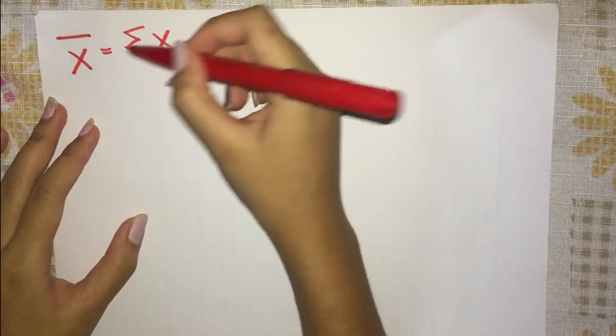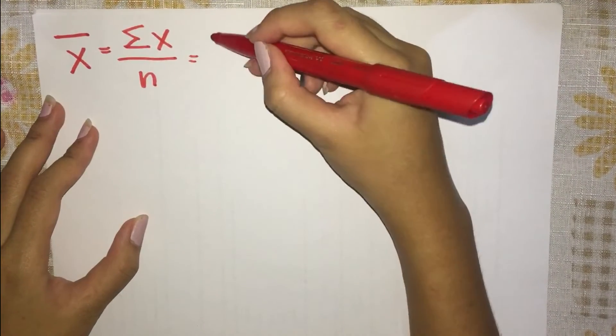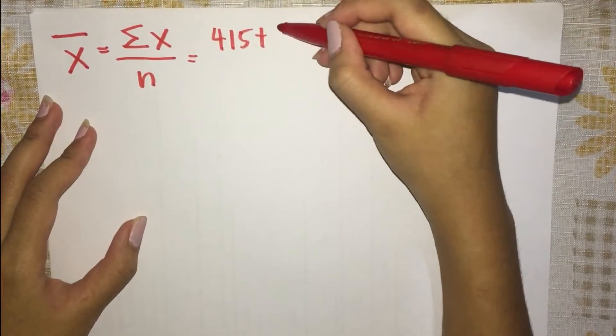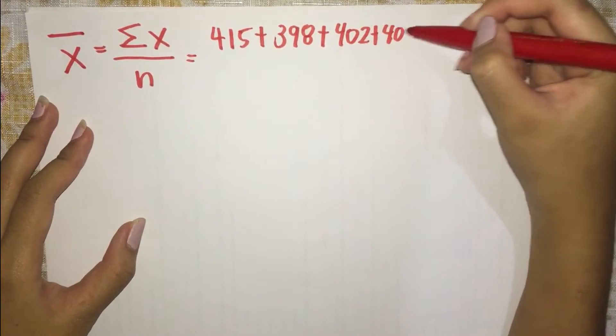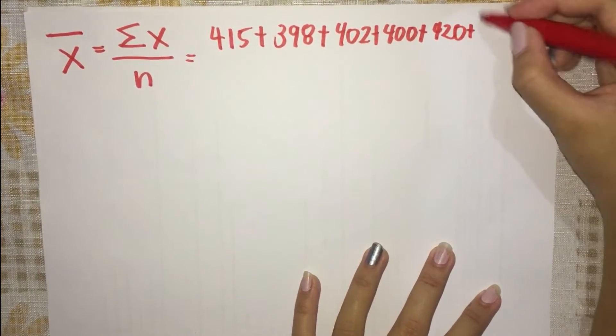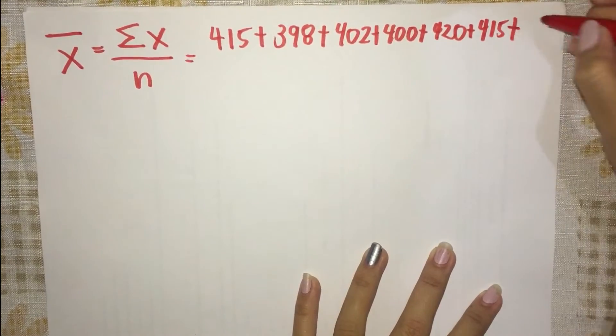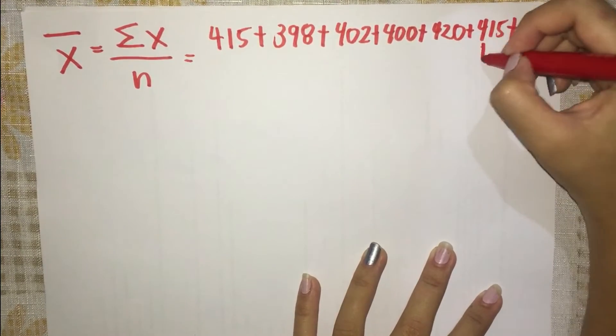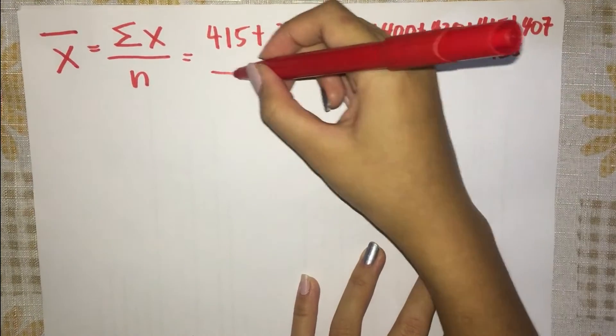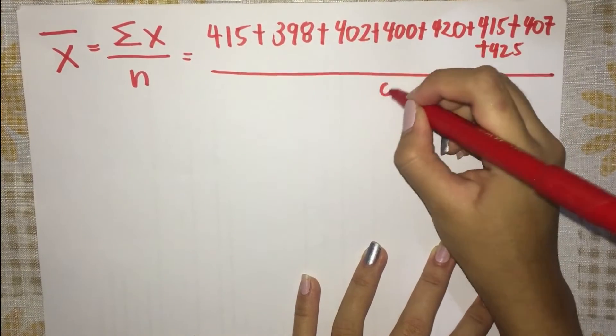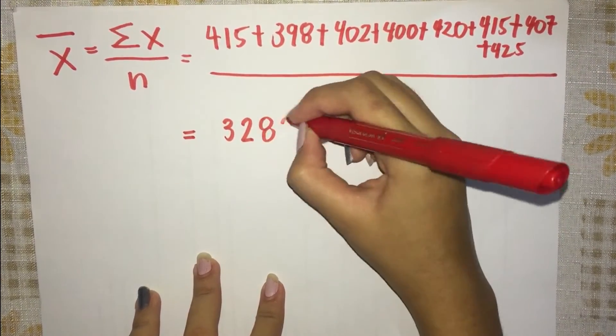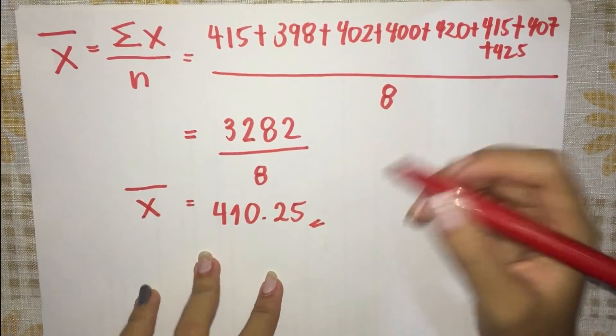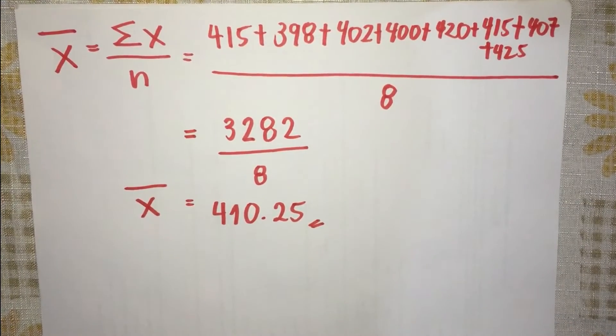To find the mean, add all the values, then divide it by the total number of data. The sum of all values is 3,282. We shall divide it by 8, the total number of data given. The mean is equal to 410.25.